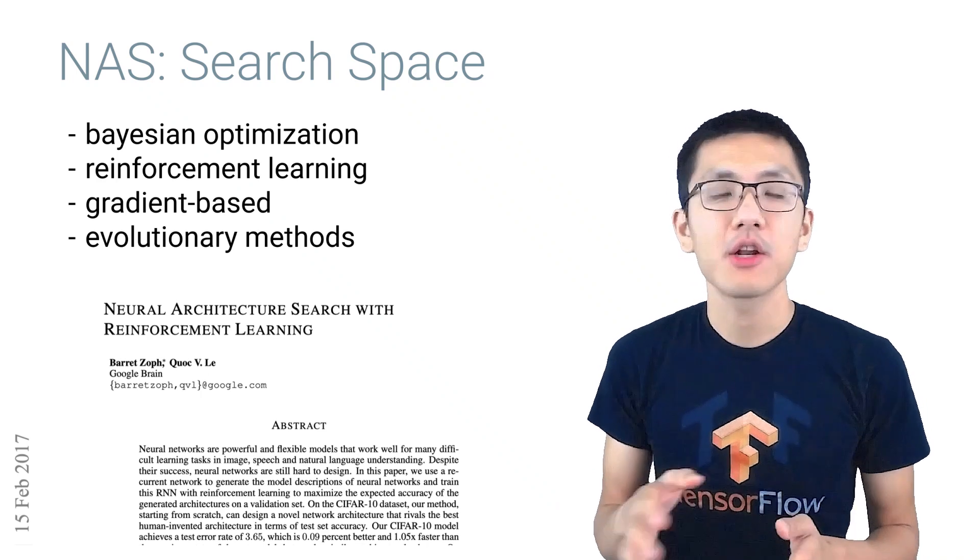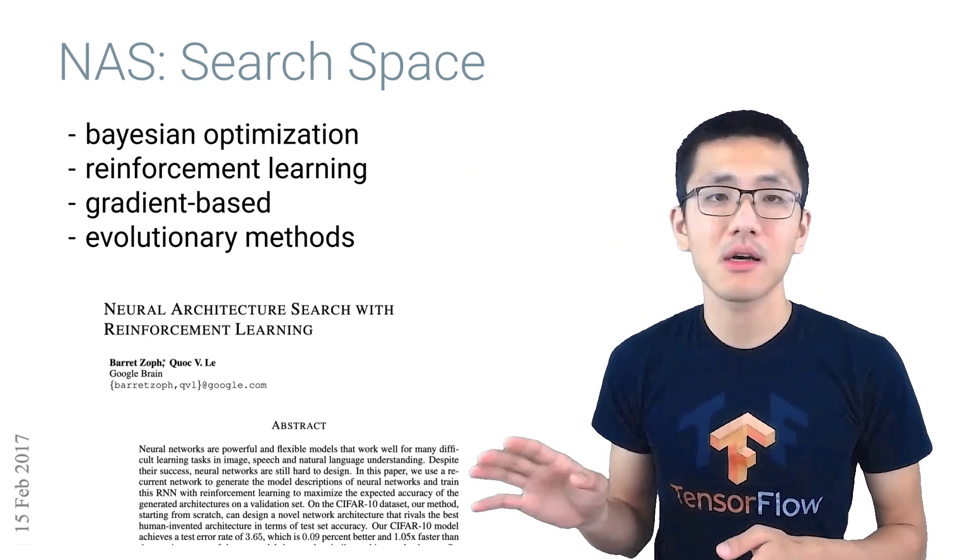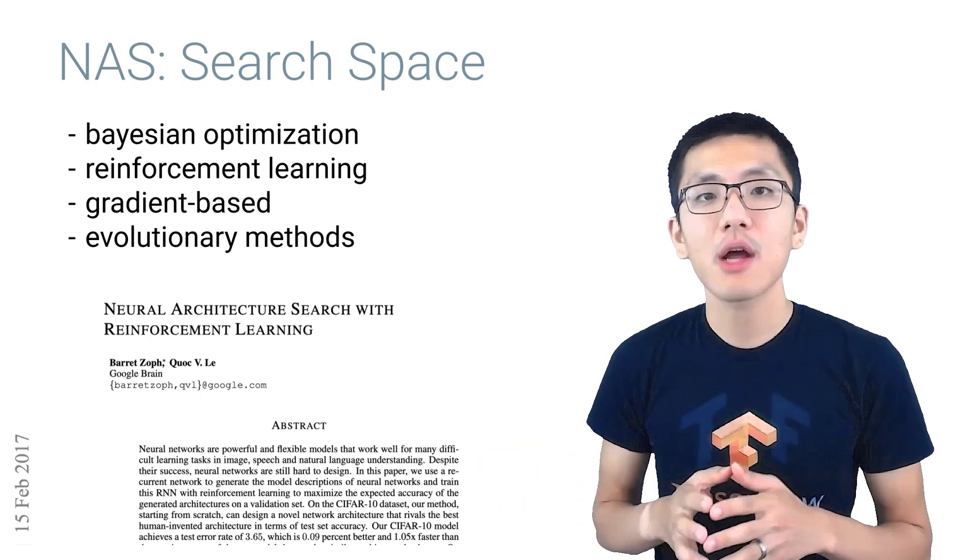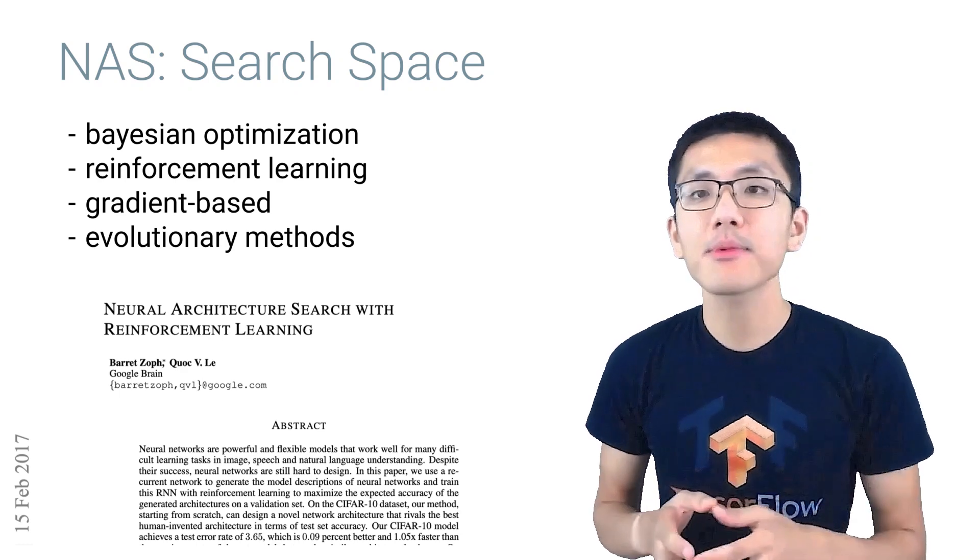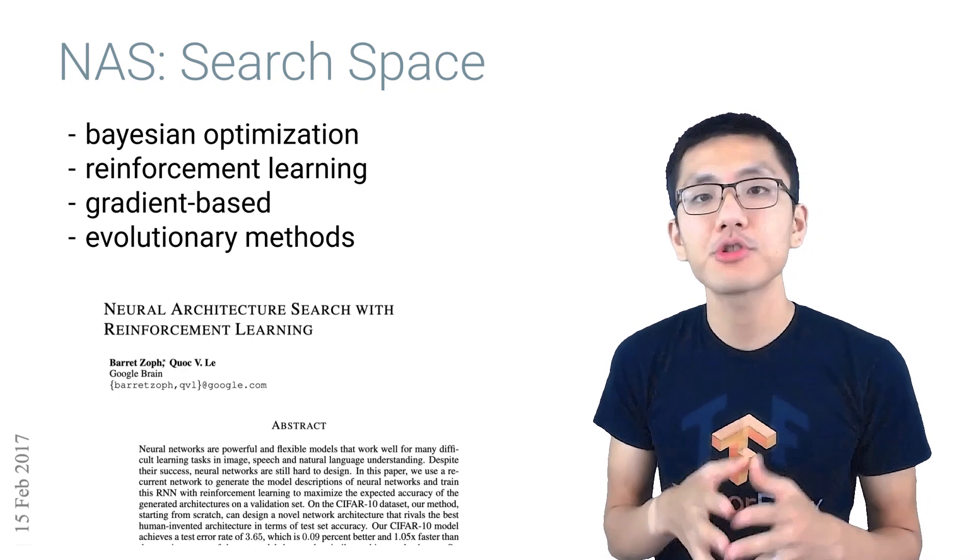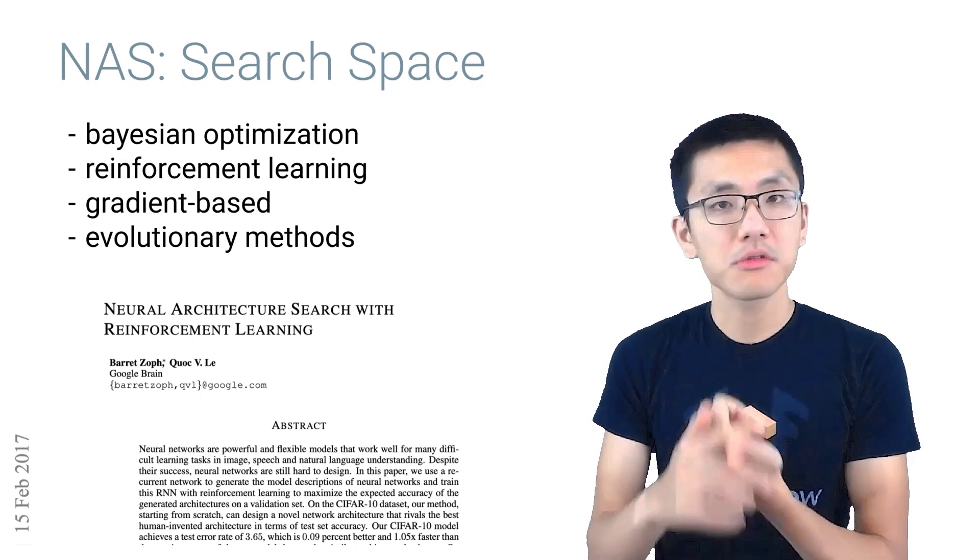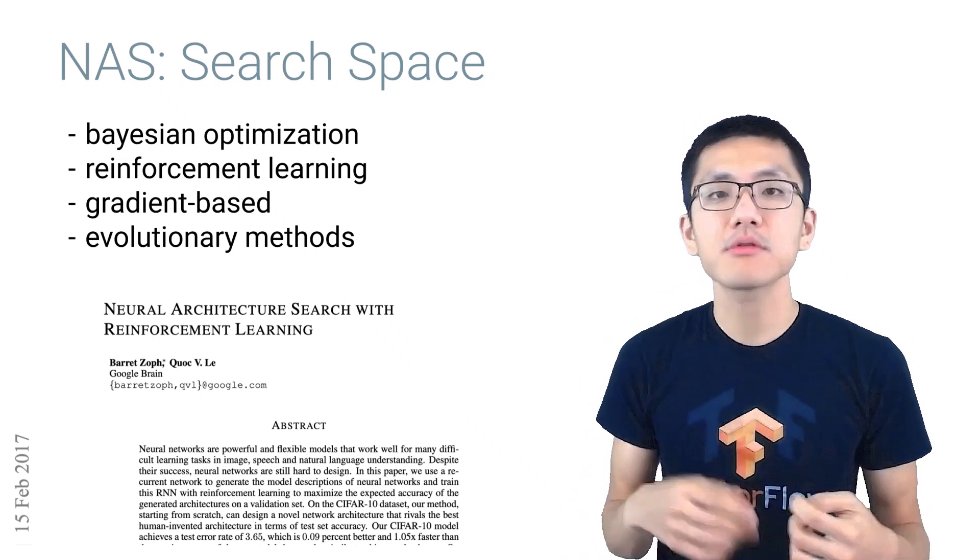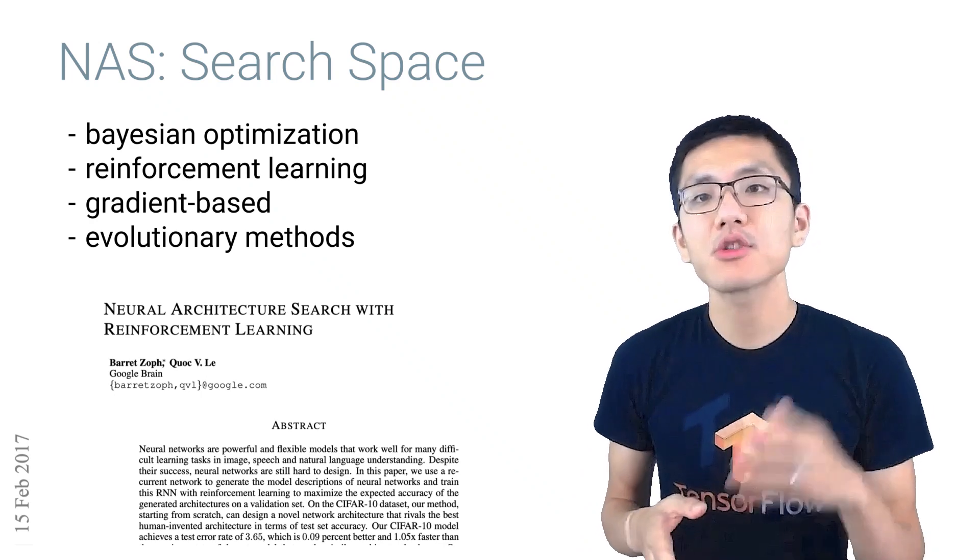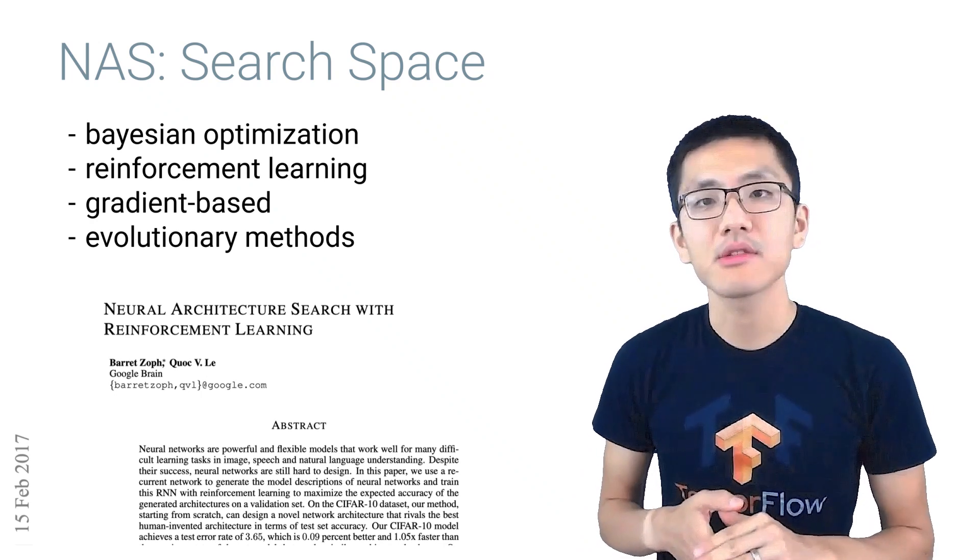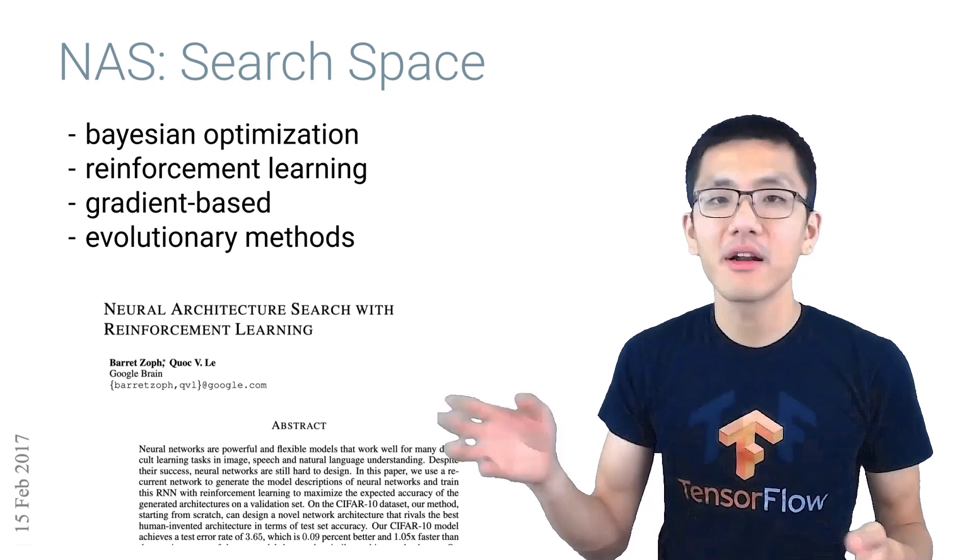Many different approaches have been tried over the years, and many more are still to come. Some approaches that have been tried with success include Bayesian optimization, which is also a popular choice for hyperparameter tuning, reinforcement learning, using that performance score of each model to drive that loop, as well as gradient-based and evolutionary methods, which adopt some ideas from other areas of science.